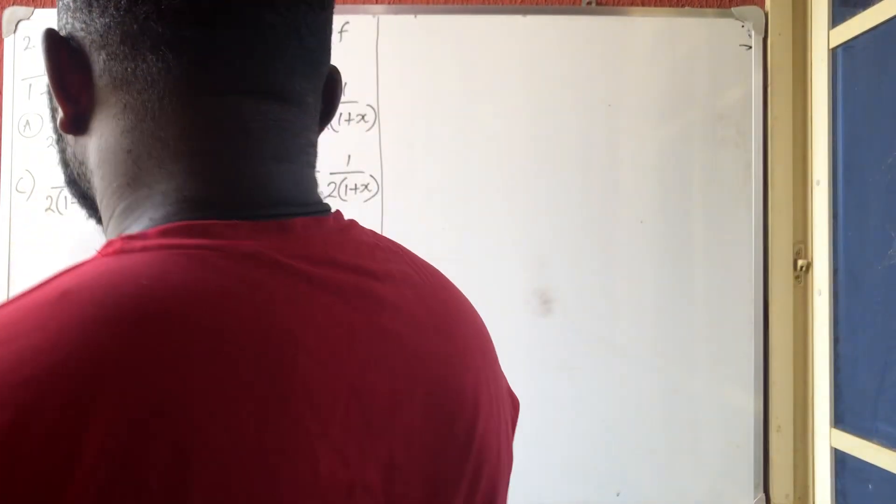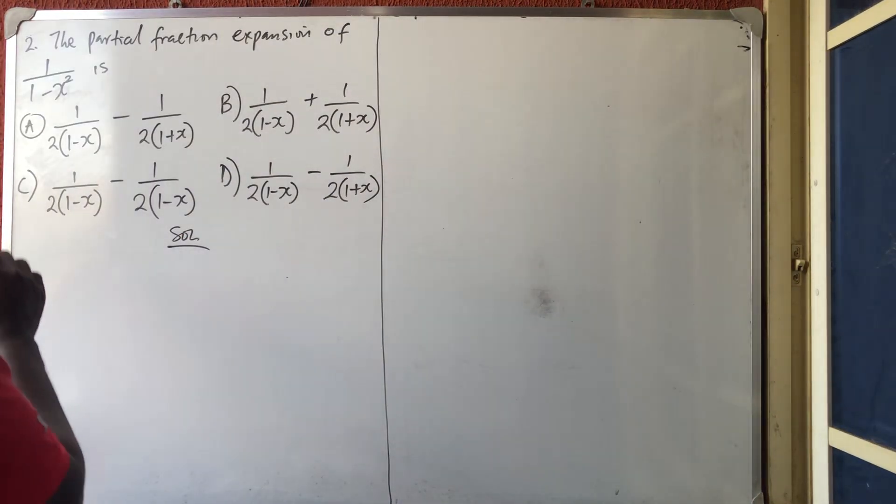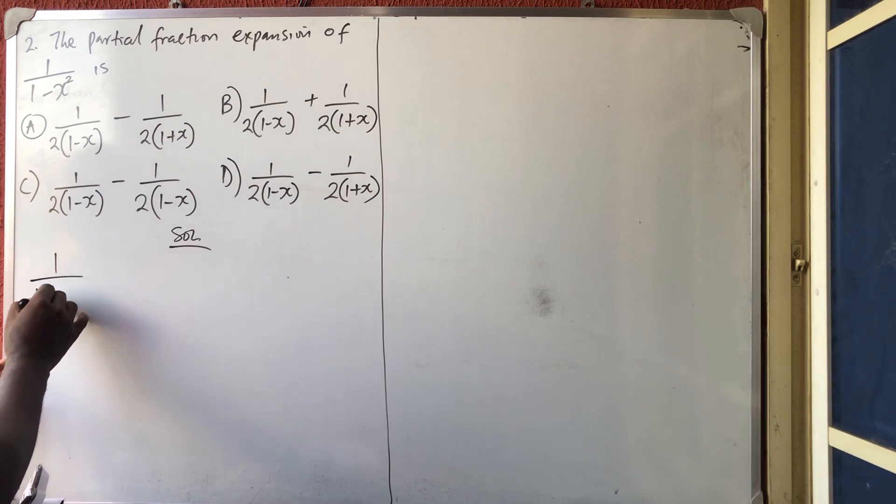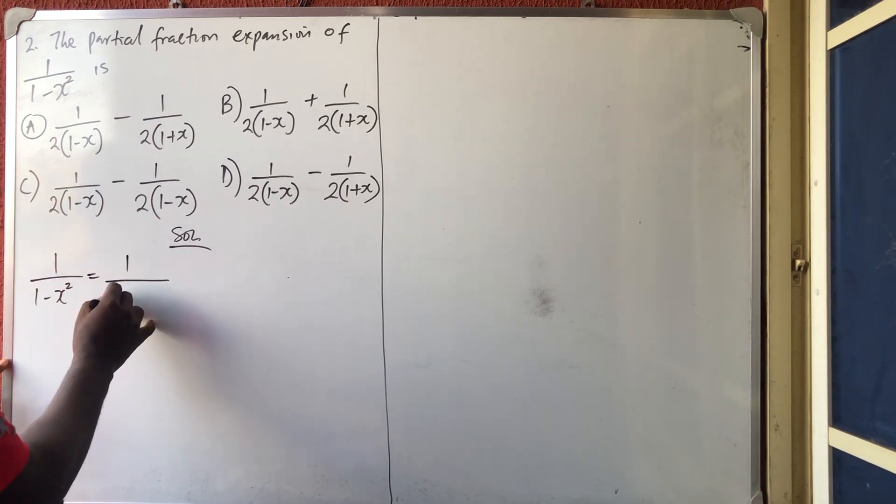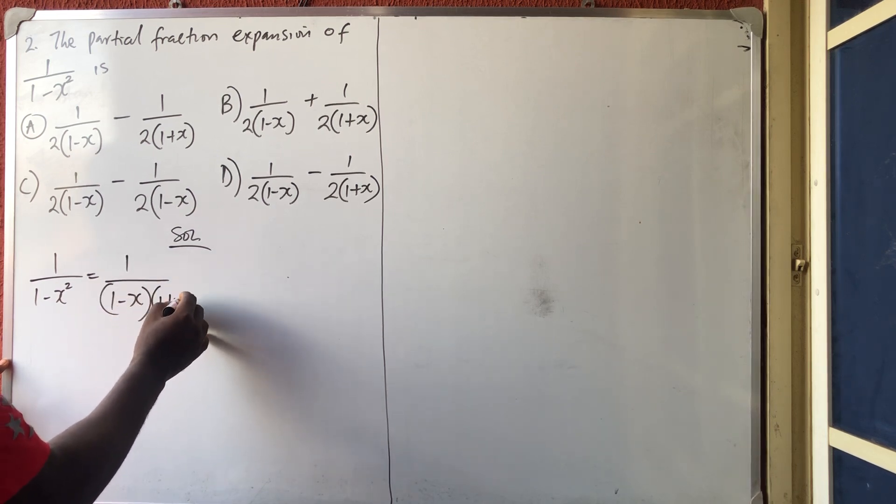Alright, let's solve this simple problem. I have 1 over 1 minus x squared. You know that this is the difference of two squares, so it's going to be 1 over (1 minus x) times (1 plus x).